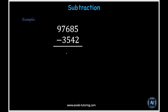Let's move on to subtraction. In this example, we are being told to subtract 97,685 minus 3,542. In order to solve this, we'll start in the ones place and subtract our way from there through each column. So in the ones place, we have 5 minus 2, which is equal to 3. In the tens place, we have 8 minus 4, which is equal to 4. In the hundreds place, we have 6 minus 5, which is equal to 1.